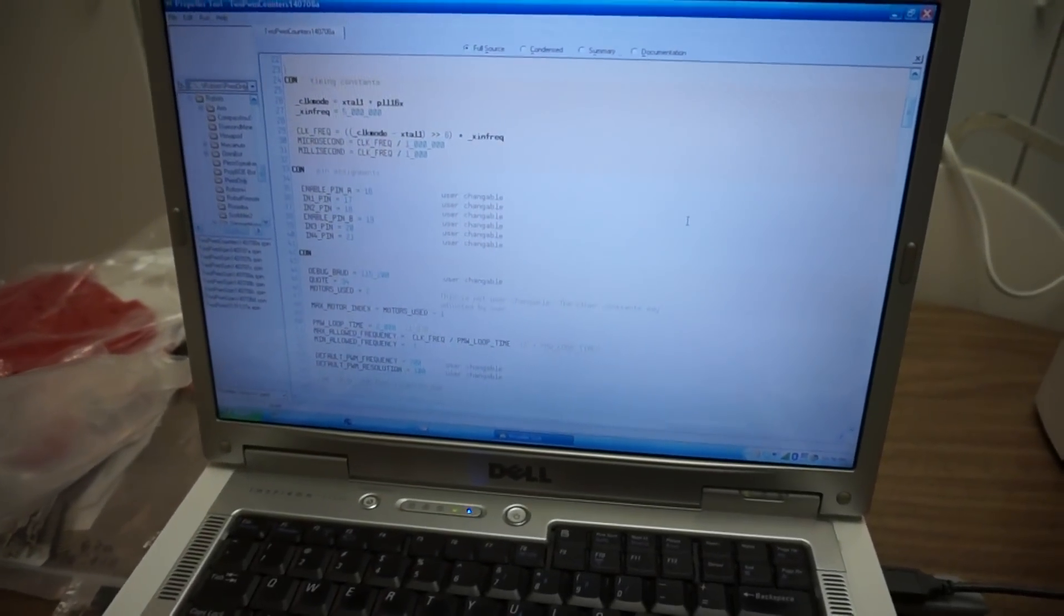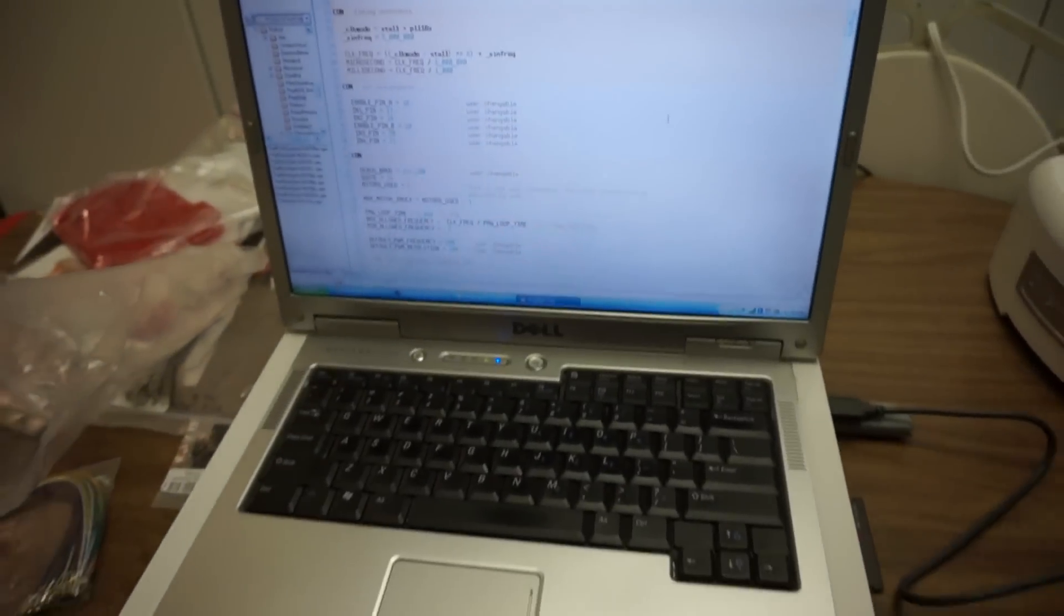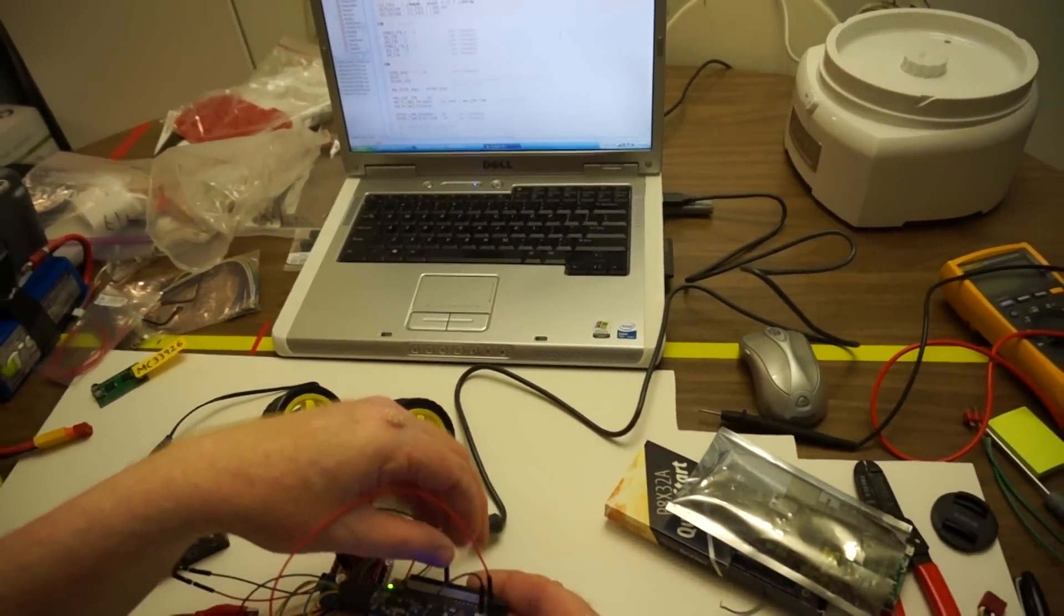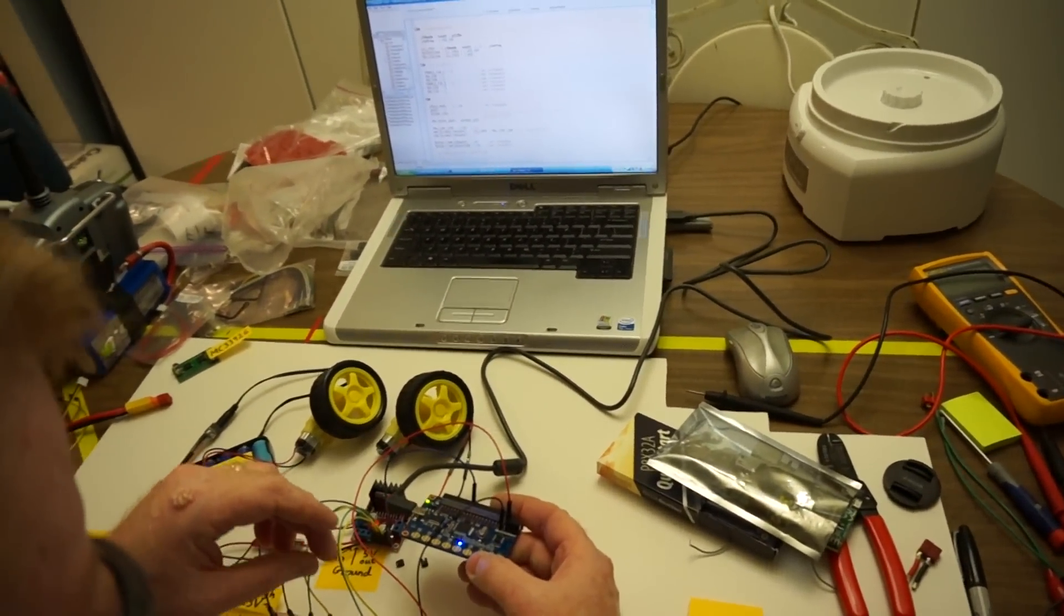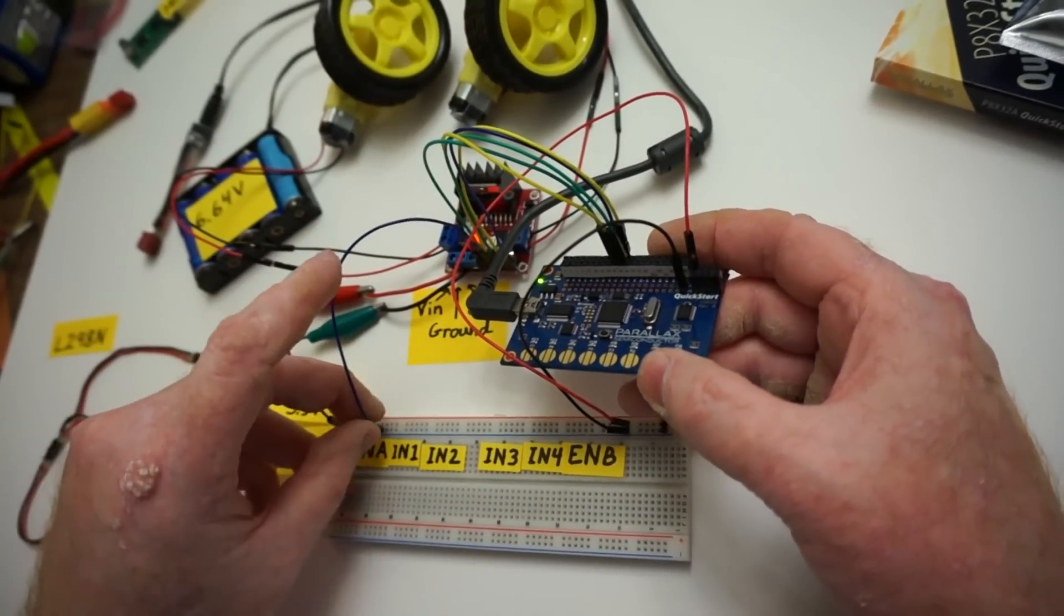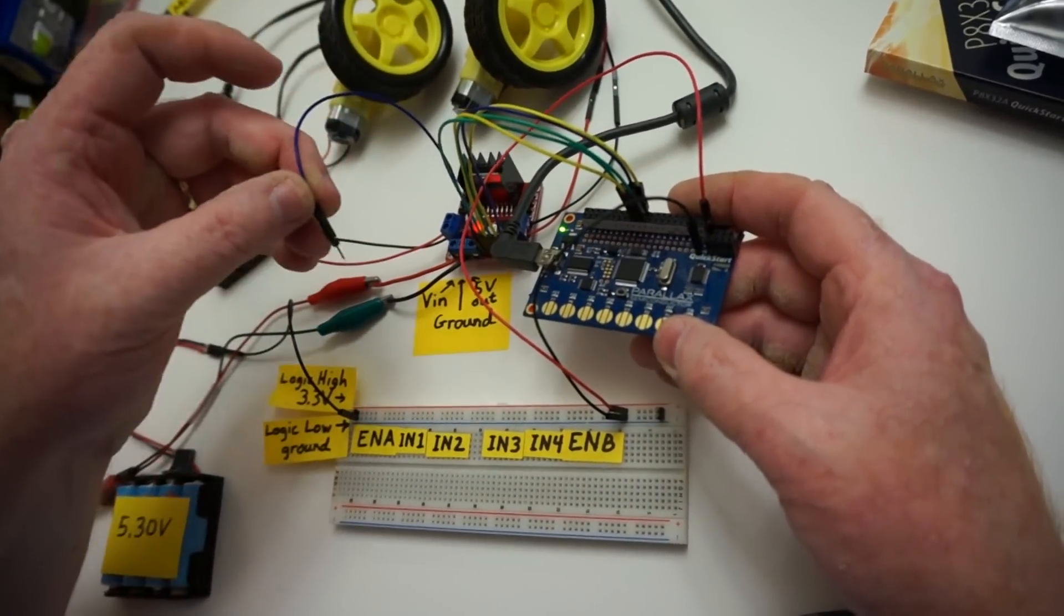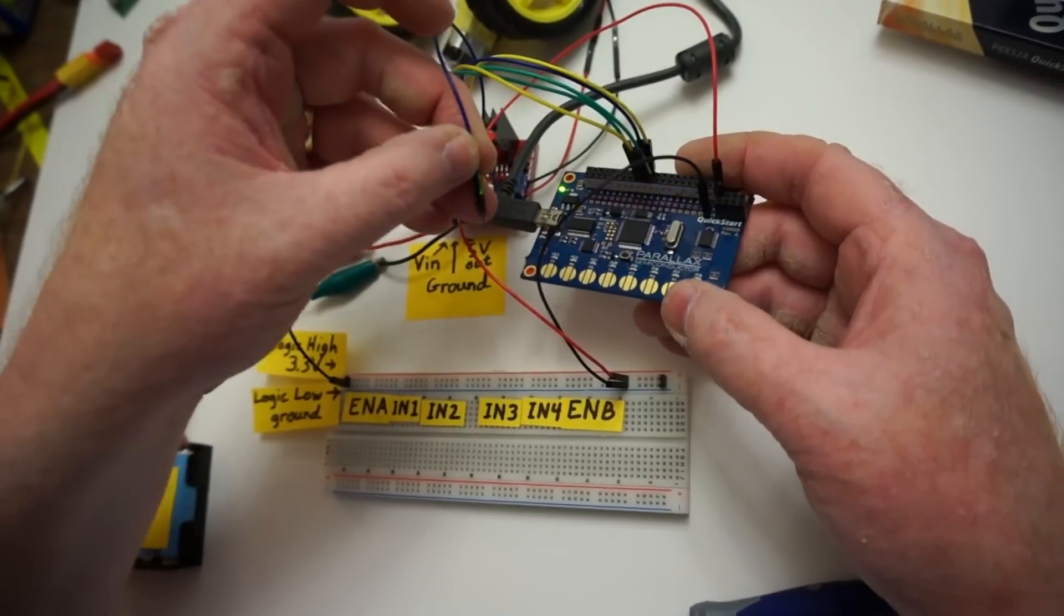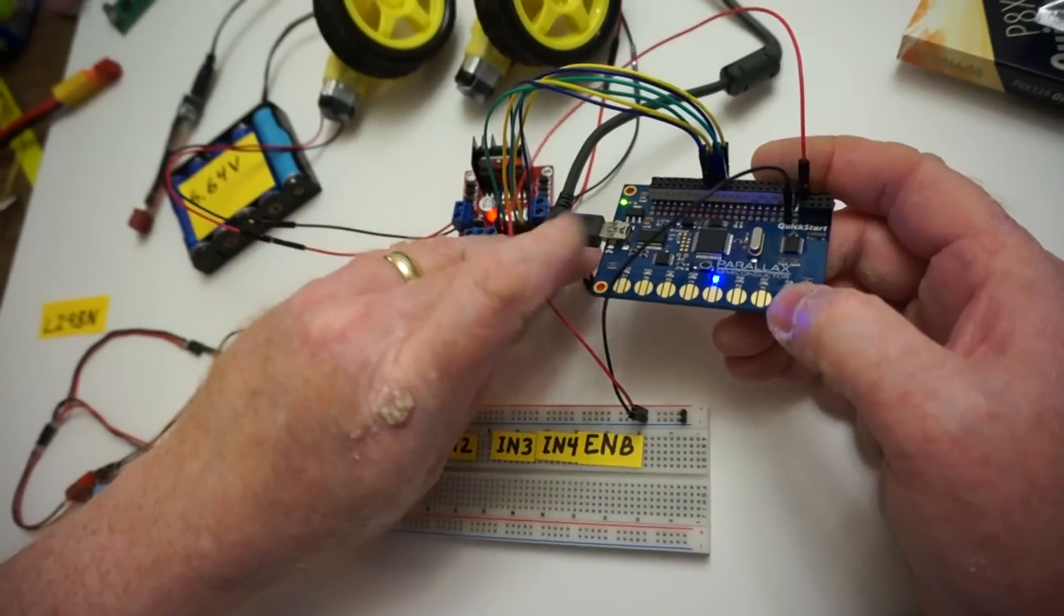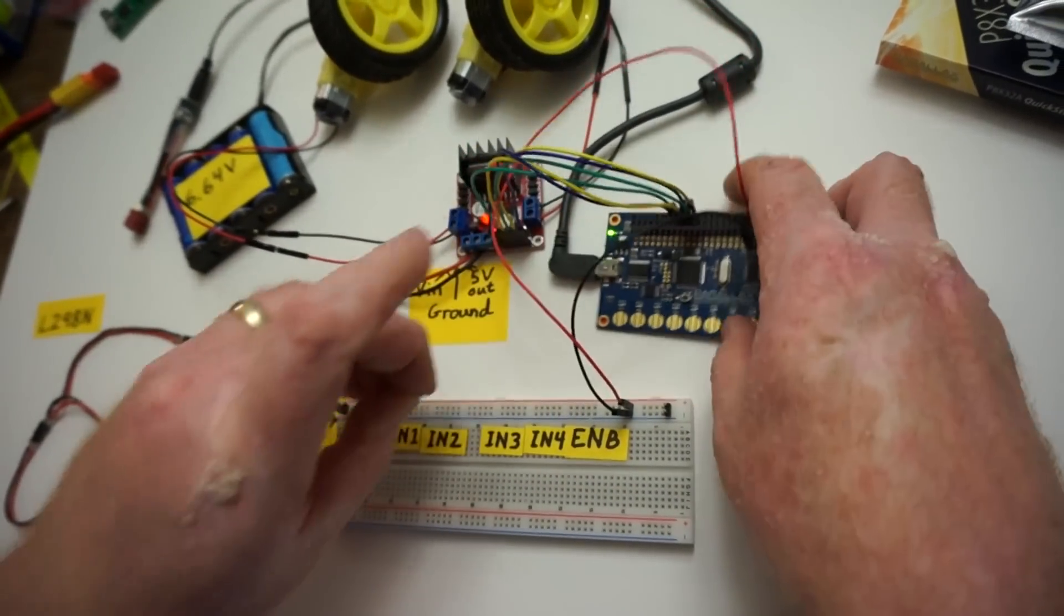So I'm going to start with Enable B, and Enable B connects to pin 19. 19 is behind 18. And then Enable A connects to 16.